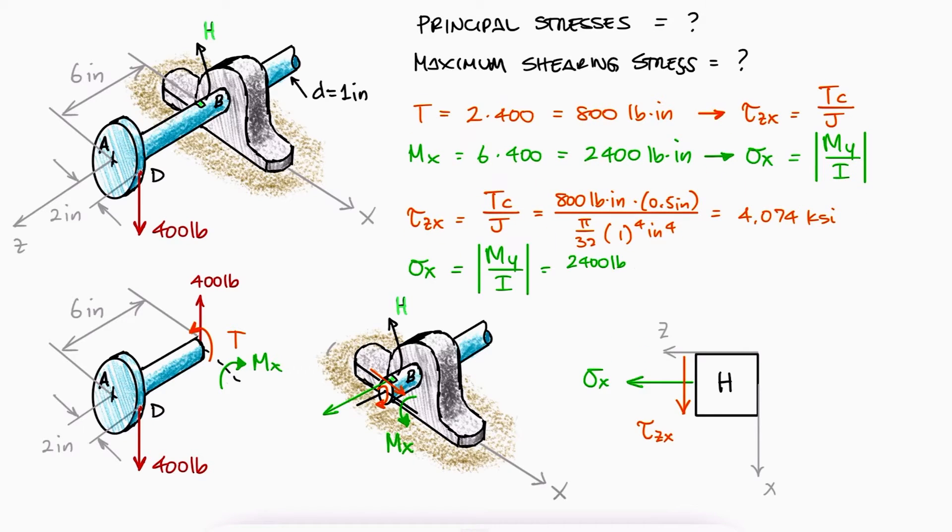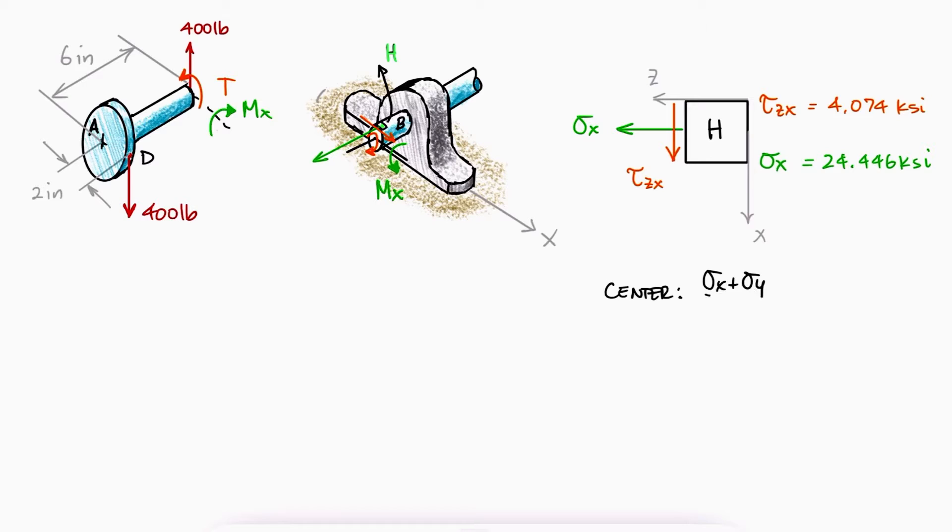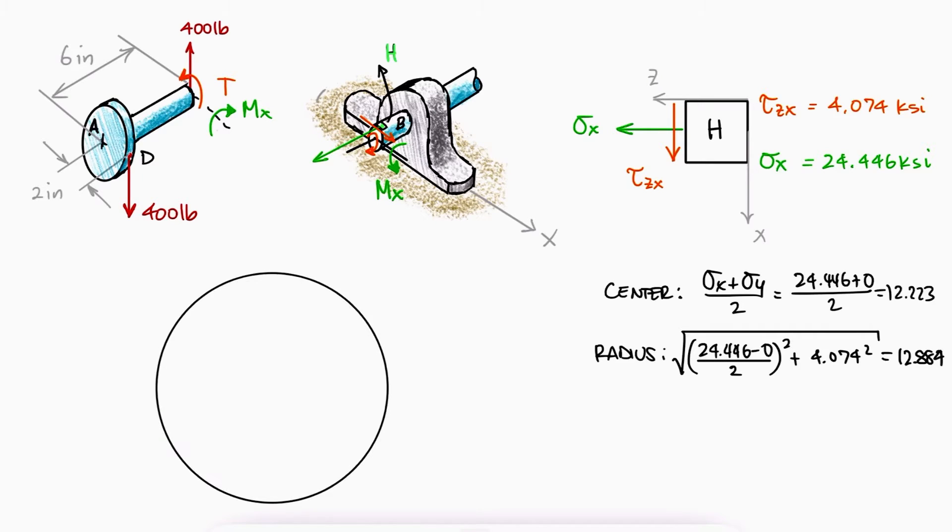By calculating these stresses, we can find the center and the radius of the Mohr circle. The center would be at 12.2, the max at the center plus a radius, and the min at the center minus a radius.